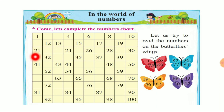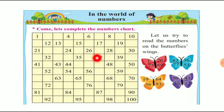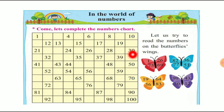So there is a serial order. 21, 22, 23, 24, 25, 26, 27, 28, 29, 30. There is a serial order — 21 to 30 in serial order.